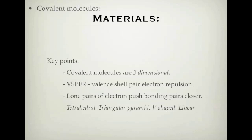Here's a summary of the key points. Covalent molecules are three-dimensional. VSEPR — valence shell electron pair repulsion — explains why they get their molecular shapes. Lone pairs of electrons push bonding pairs closer together. Our four shapes are: tetrahedral, triangular pyramid, V-shaped, and linear. Next time we'll look at polarity and the properties of covalent molecules. Until then, happy studying and enjoy your chemistry.